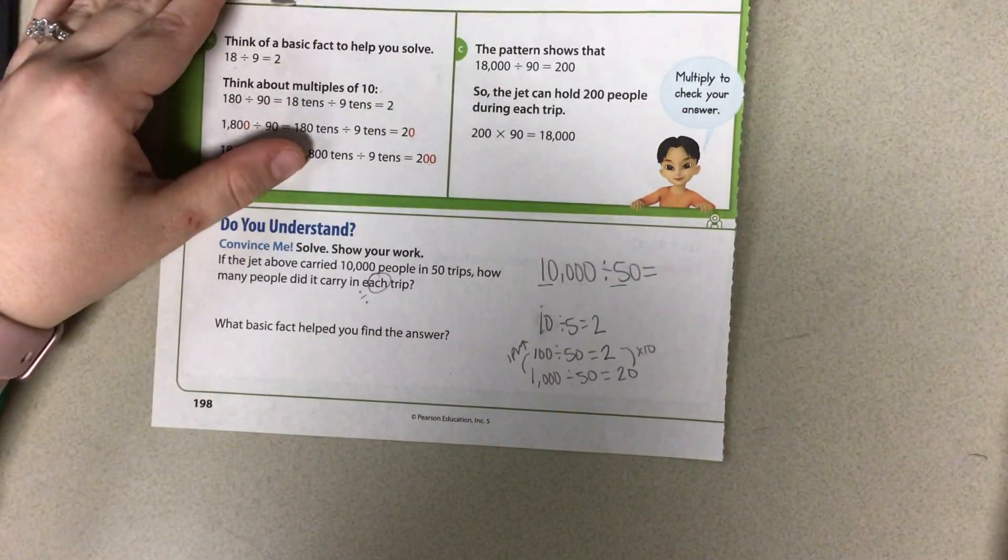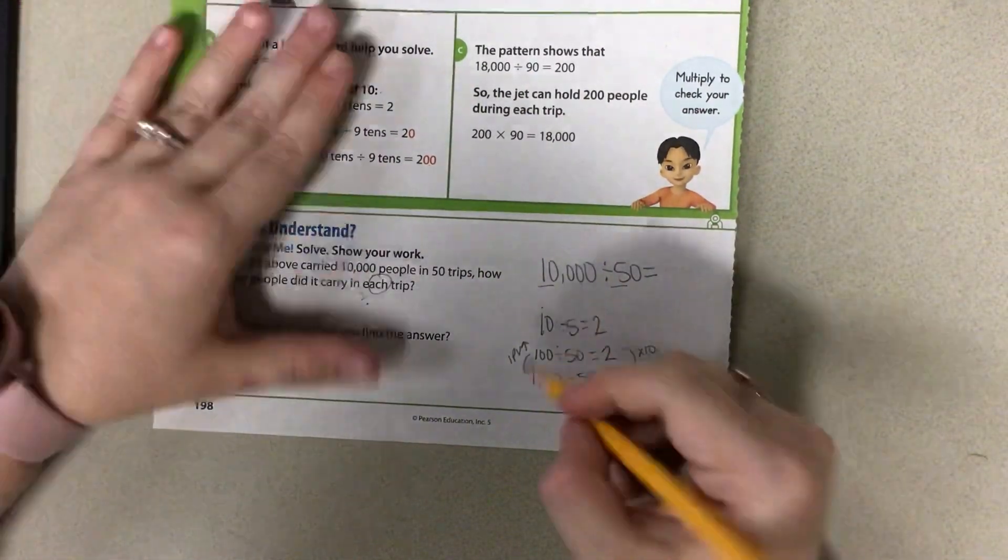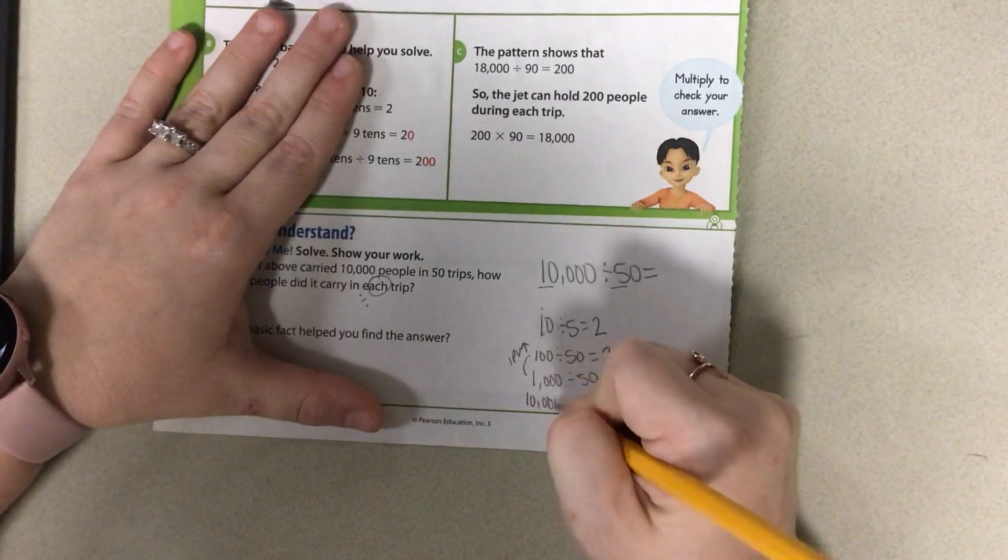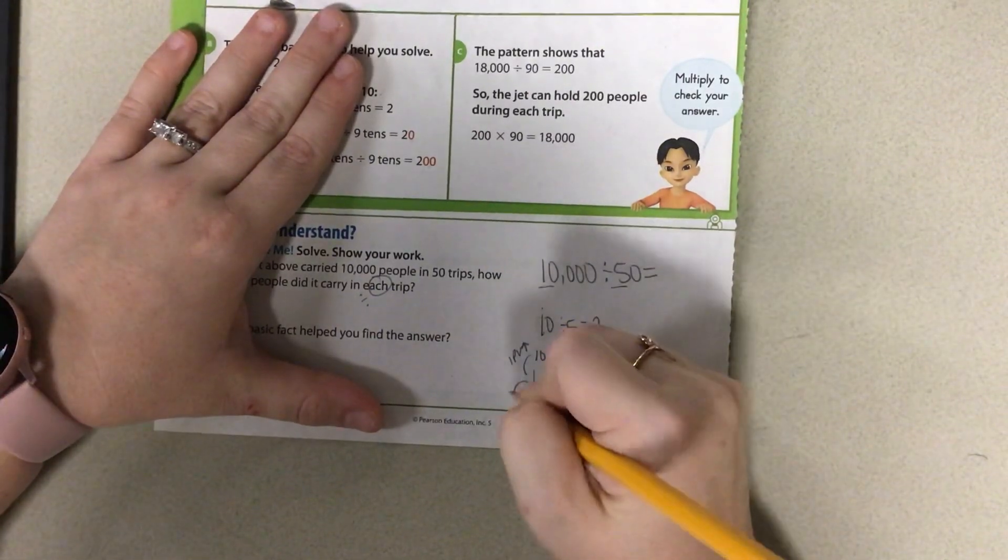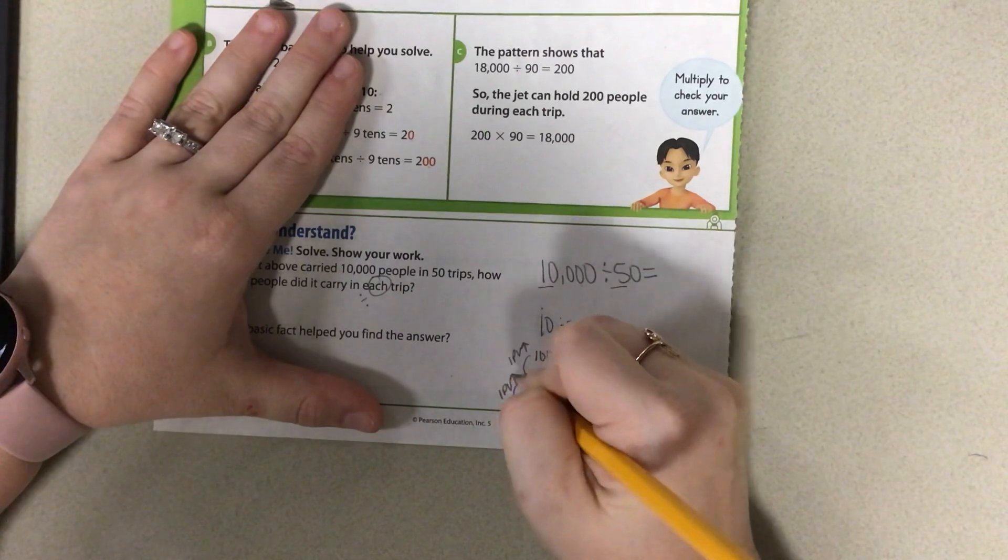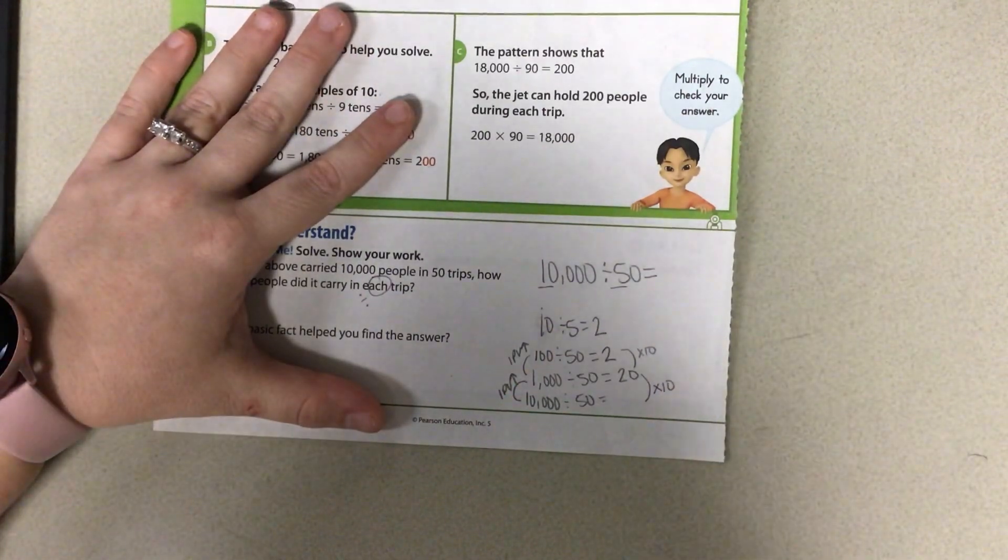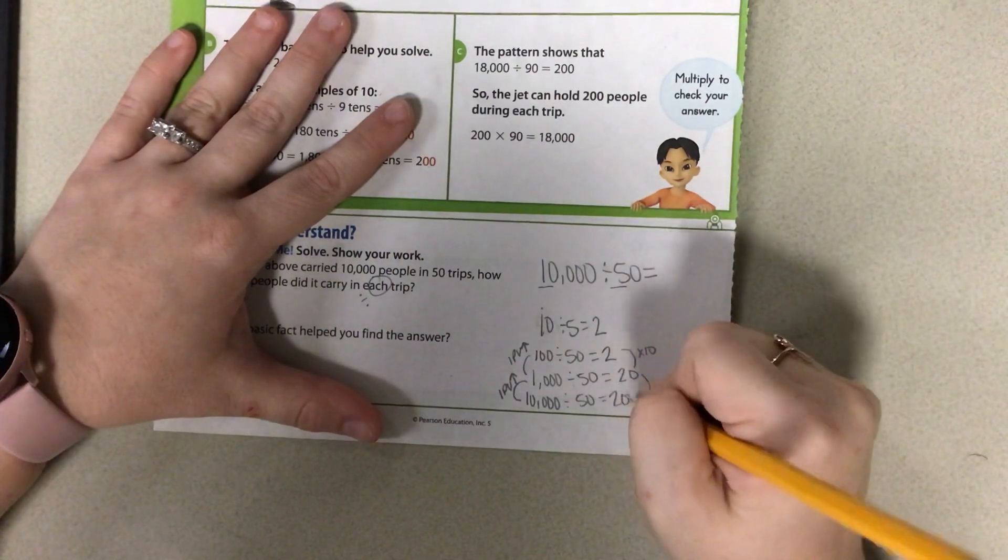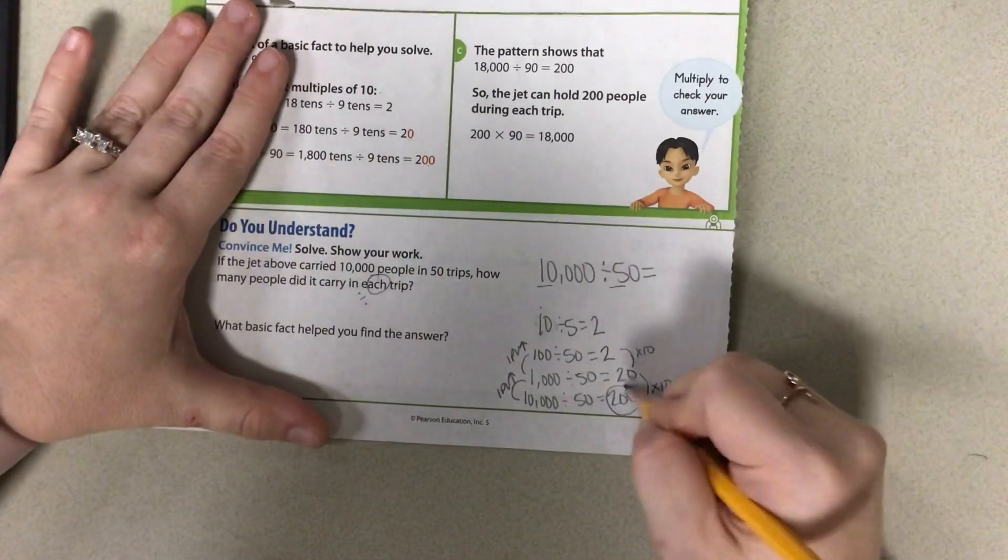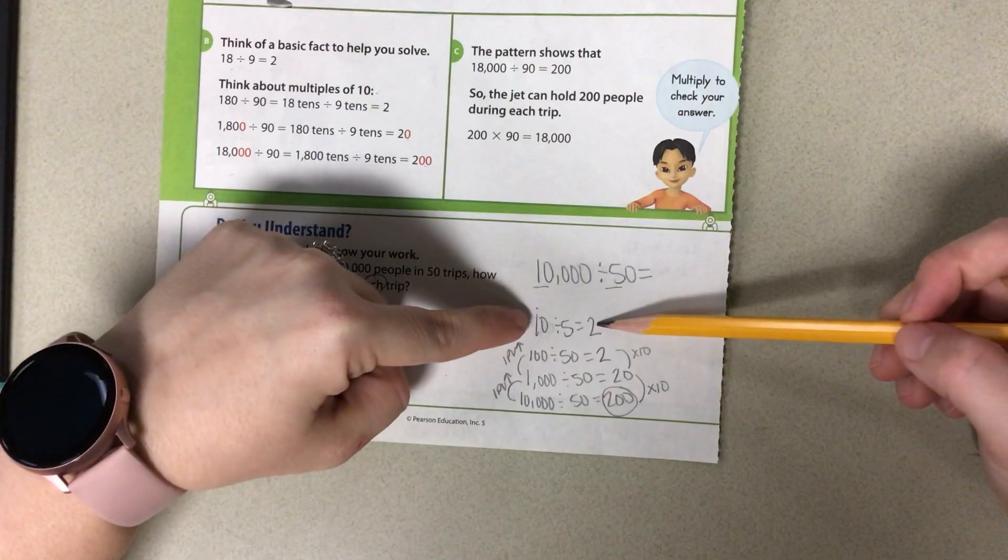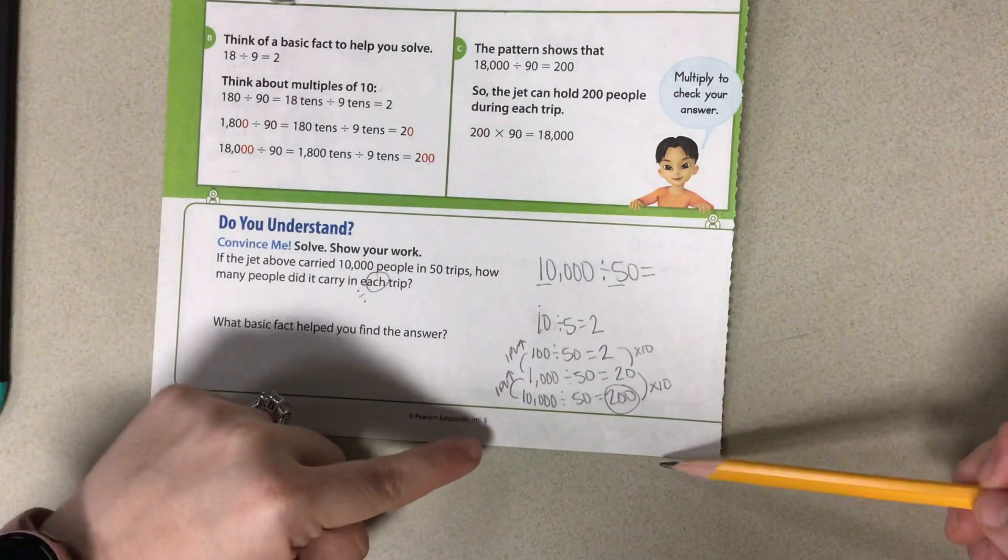Am I done? Nope, I'm only at 1,000, so I need to do 10,000 divided by 50. Here again, I went one place value larger, so here I need to times it by 10. So 20 times 10 would be 200. So my answer is 200. Do you see how we took our basic math fact and we worked our way down?